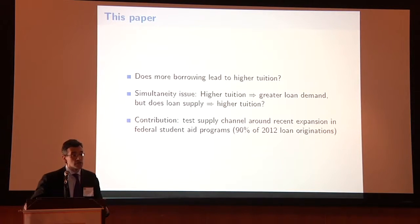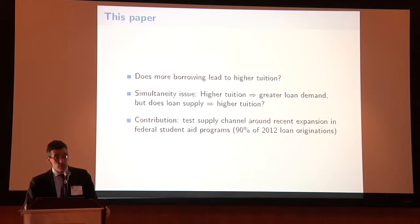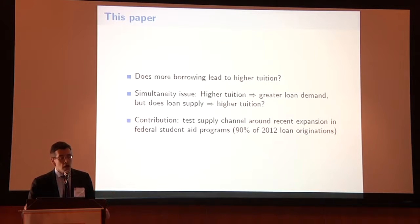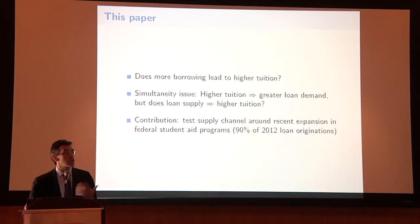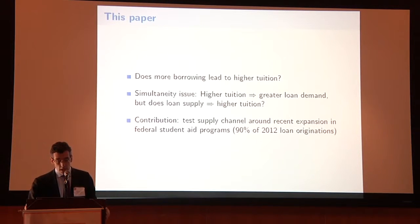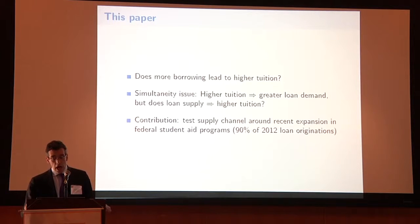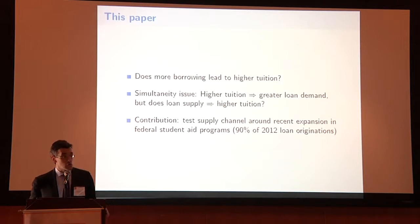The question in this paper is: does greater availability of student debt lead to higher tuition? When you look at the data, there's a standard simultaneity issue. If tuition is trending higher for other reasons, students may simply demand more loans to fund that cost increase — but this may not be a causality from additional credit to pricing. The contribution of this paper is specifically to test for the presence of this supply channel, looking at the recent expansion in federal aid programs.